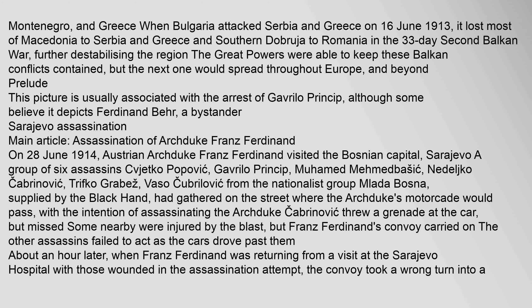When Bulgaria attacked Serbia and Greece on 16 June 1913, it lost most of Macedonia to Serbia and Greece, and southern Dobruja to Romania in the 33-day Second Balkan War, further destabilizing the region. The Great Powers were able to keep these Balkan conflicts contained, but the next one would spread throughout Europe and beyond. This picture is usually associated with the arrest of Gavrilo Princip, although some believe it depicts Ferdinand Bear, a bystander.